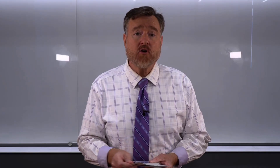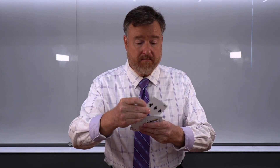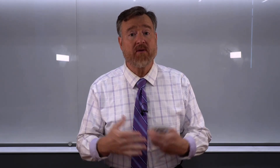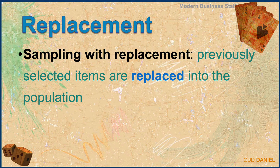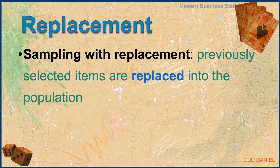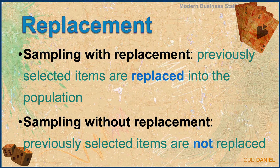The first has to do with replacement. If you pick a card at random and put it back into the data set, you have sampled with replacement. Sampling with replacement is when previously selected items are replaced into the population. This is in contrast to sampling without replacement, in which previously selected items are not replaced.